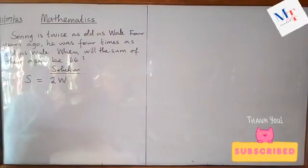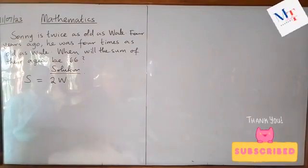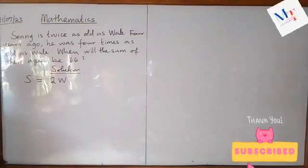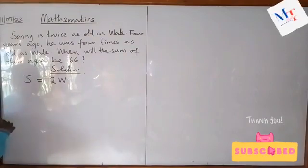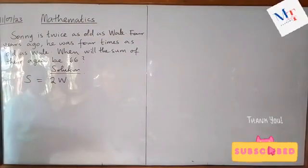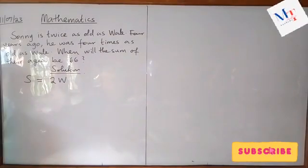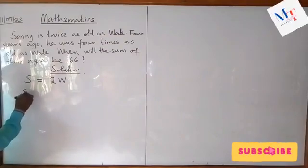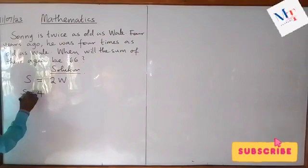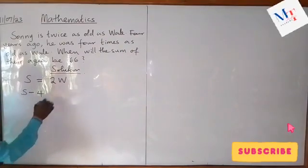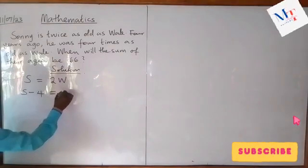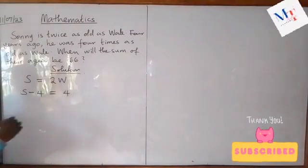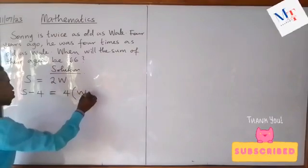That is the first equation. For the second statement — four years ago, he was four times as old as Wally. Four years ago, we need to get the age of Sonny four years ago, which would be S minus four. So four years ago, Sonny is S minus four years. He was four times the age of Wally four years ago, and Wally four years ago was W minus four.